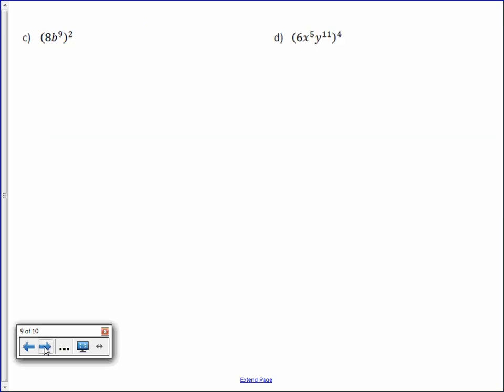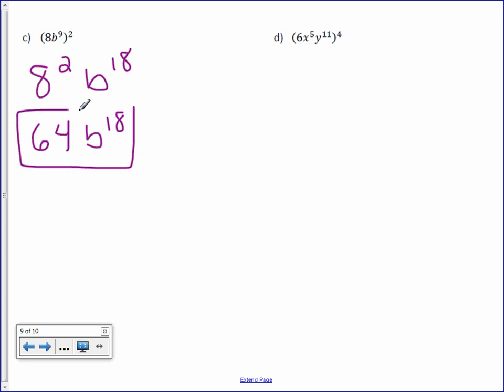Letter C. Distribute your exponent. 8 squared. B to the 18th. By multiplying. 8 squared is 64. Bring down the B to the 18th.